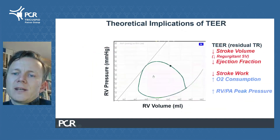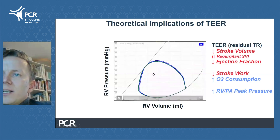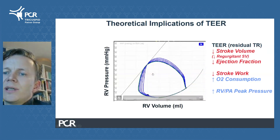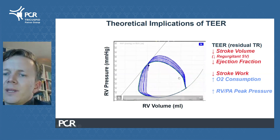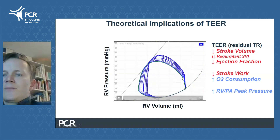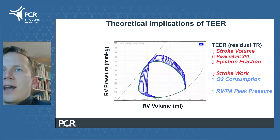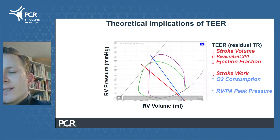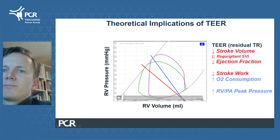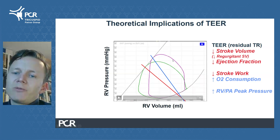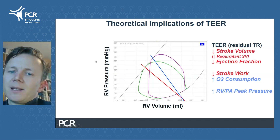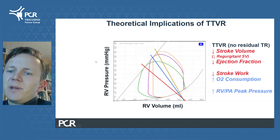Now let's look at what happens when we perform tricuspid edge-to-edge repair. RV stroke volume is reduced by means of a reduction in regurgitant volume, also reducing RV ejection fraction. However, RV afterload is increased, systolic pressure increases, and there is a slight increase in pressure-volume loop area, also indicating a possible increase in oxygen consumption.